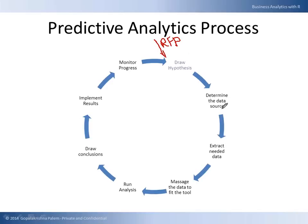You draw some hypothesis and then you determine the right data source. The customer may already provide the data source; if not, you may have to find your own. For example, if you are trying to estimate who is going to win an election, someone says Obama is going to win and someone else says another candidate is going to win.